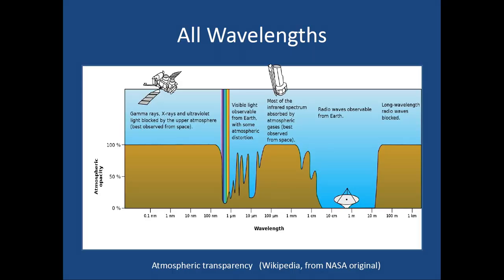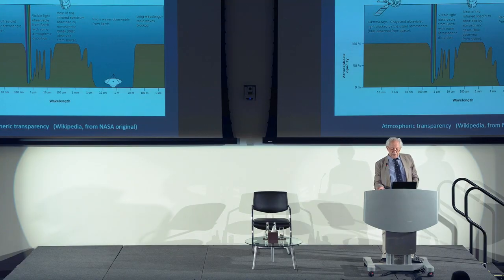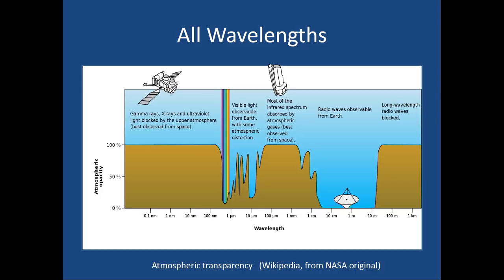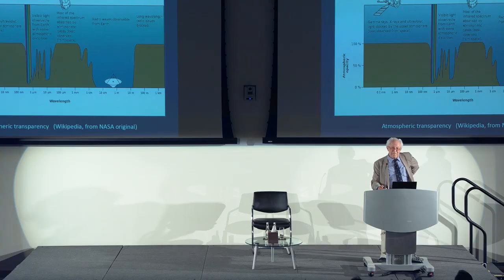The atmosphere absorbs many wavelengths: long radio waves are blocked but short radio waves get through, enabling radio telescopes. The infrared spectrum requires satellites. The visible spectrum passes through. High-energy rays — gamma rays, X-rays, ultraviolet — are blocked. This is why satellites are essential, and present-day cosmology owes a huge debt to Werner von Braun, who developed the rockets enabling satellites to get above the atmosphere.